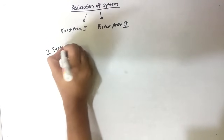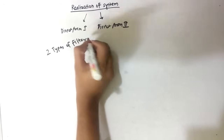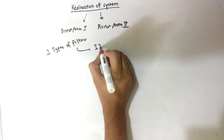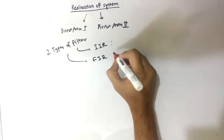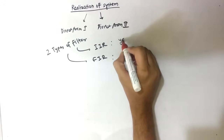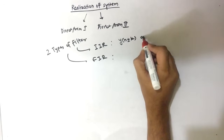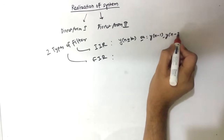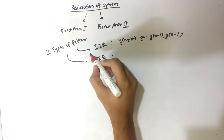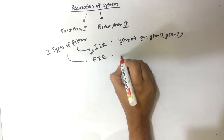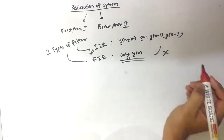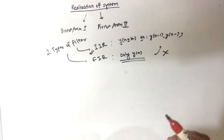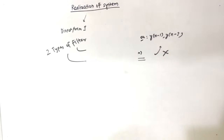We have two types of filters: Infinite Impulse Response (IIR) filter and Finite Impulse Response (FIR) filter. How to identify them is very simple. If we have y(n-k) terms — for example y(n-1) or y(n-3) — then it is an IIR filter. If there is only y(n) and no delayed y terms, then it is an FIR filter.